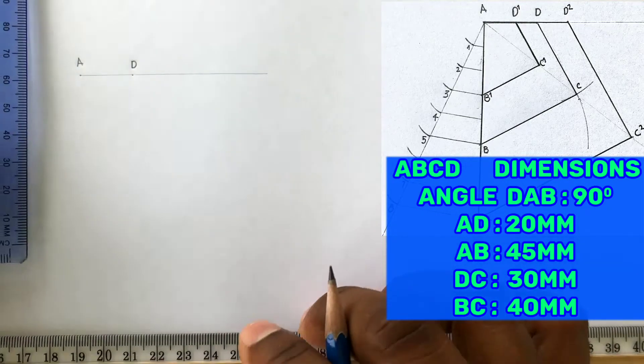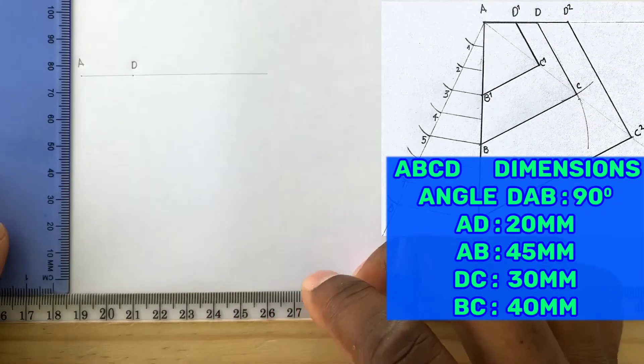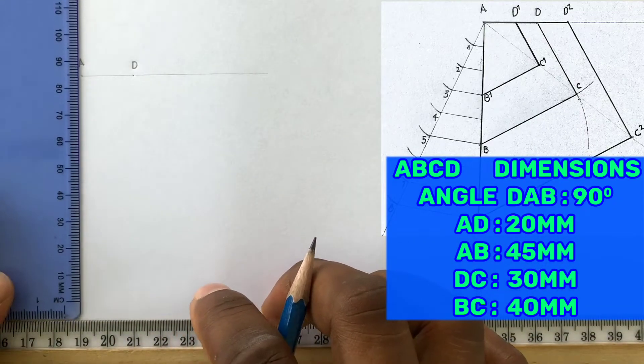Using your set square along with your T-square, draw a perpendicular line to point A.